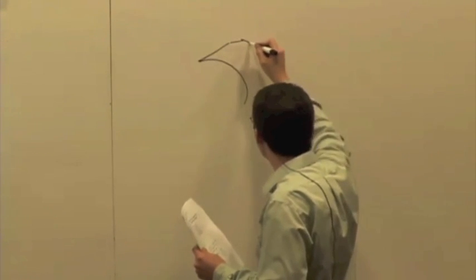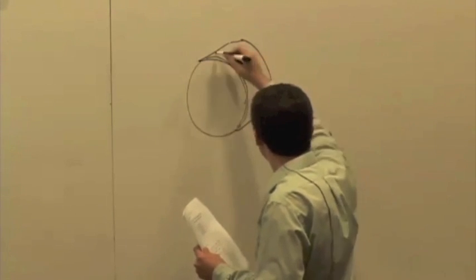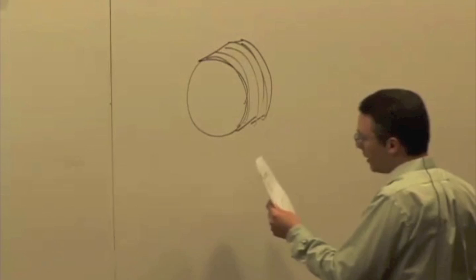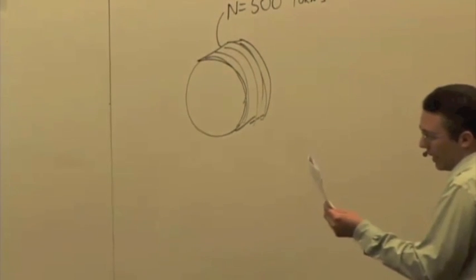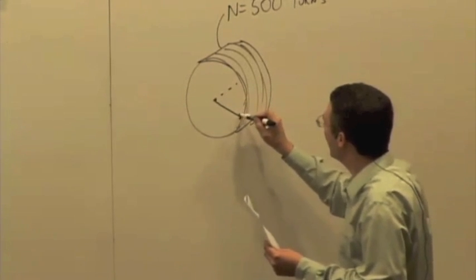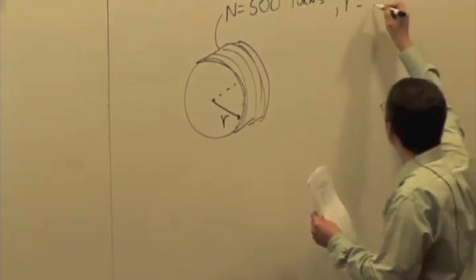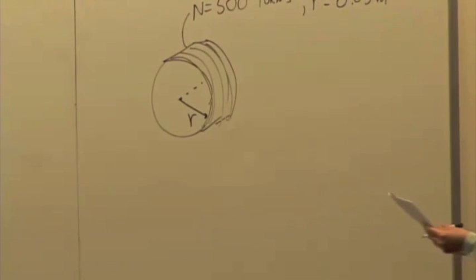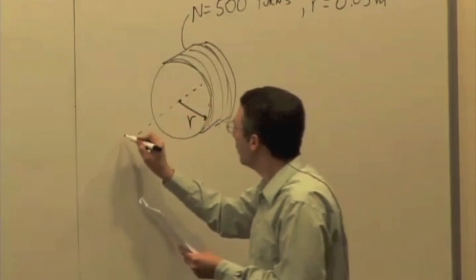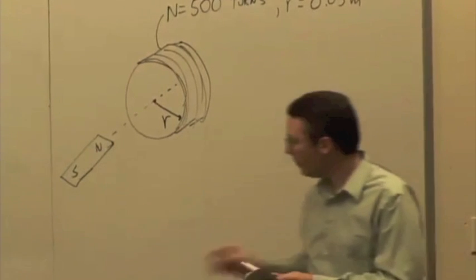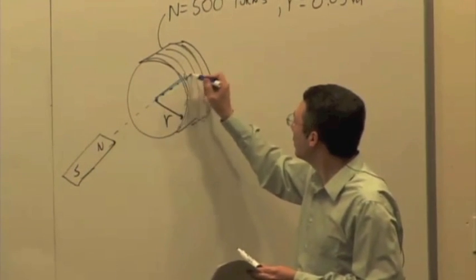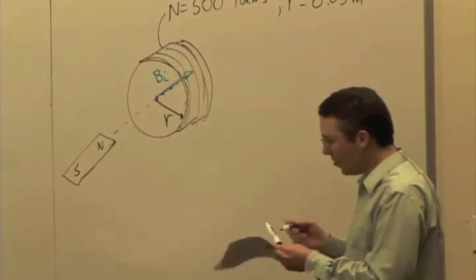So let's look at an example similar to what we did last time, what we were just doing earlier. Let's have a coil of wire. And let's give some numbers here. The coil has 500 turns of wire in it, and the radius of the coil is little r, let's say r is 3 centimeters, so 0.03 meters. And we have a bar magnet, north pole, south pole. And so we get a magnetic field pointing into the coil, the initial. And let's say B initial is 2 Tesla.